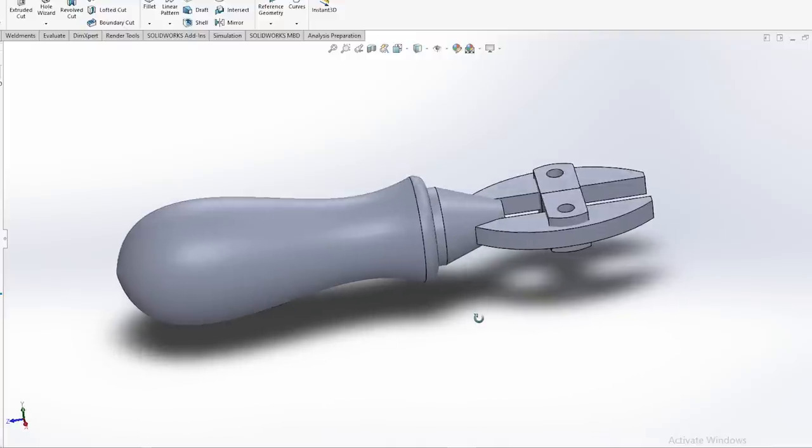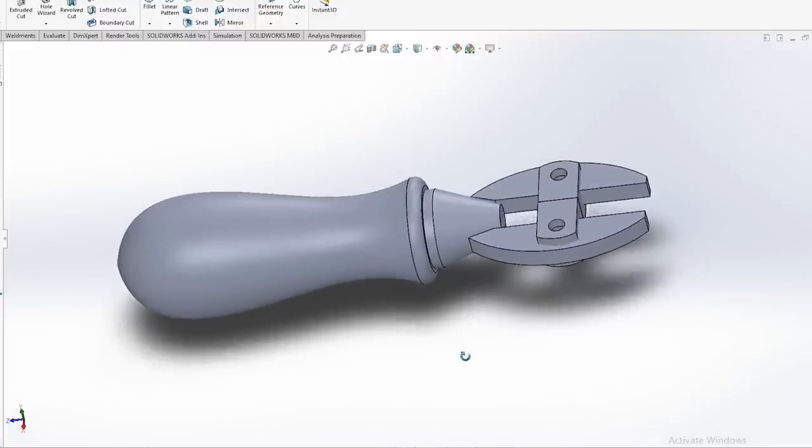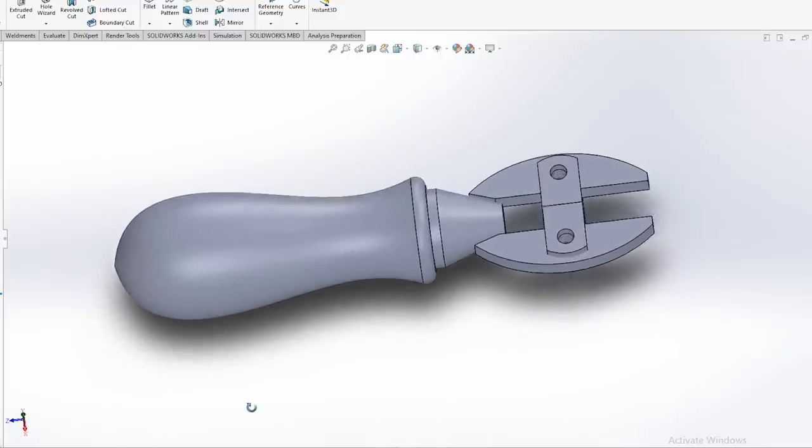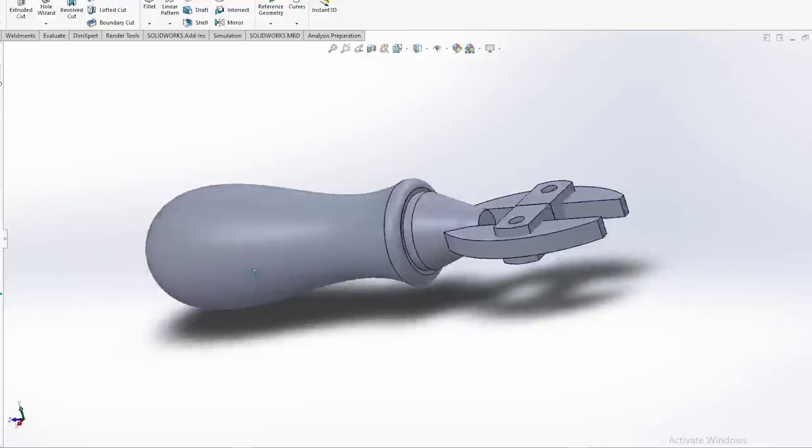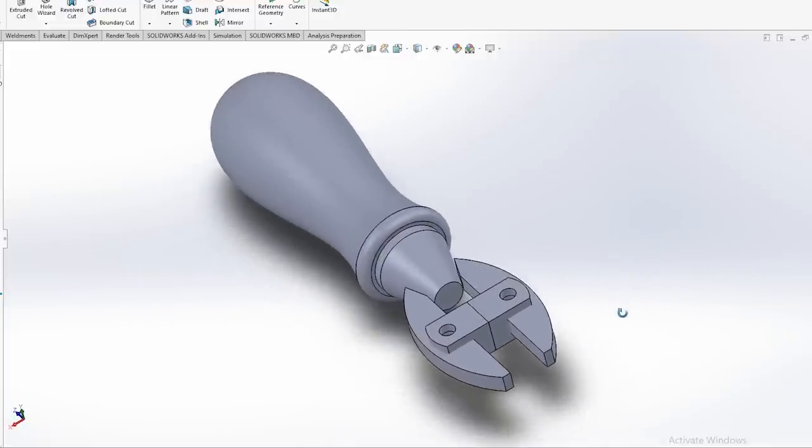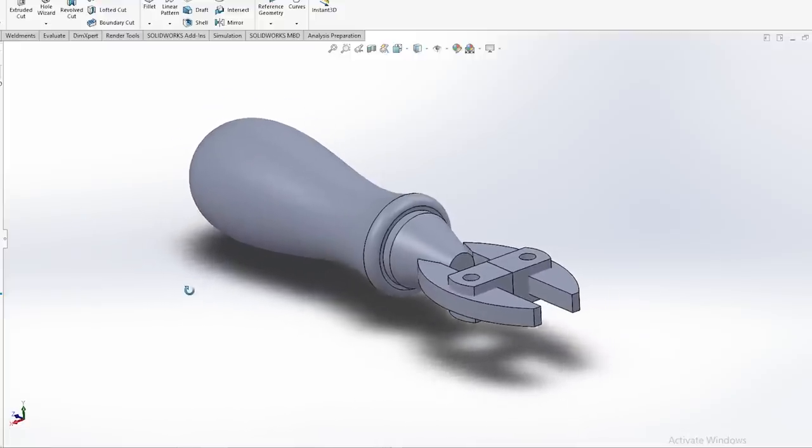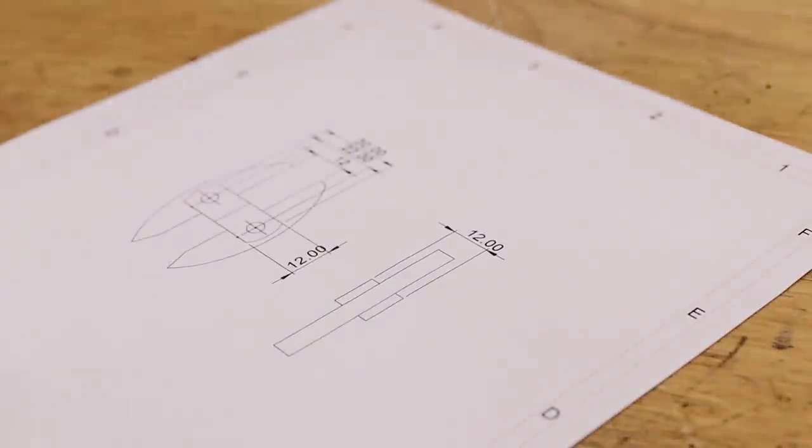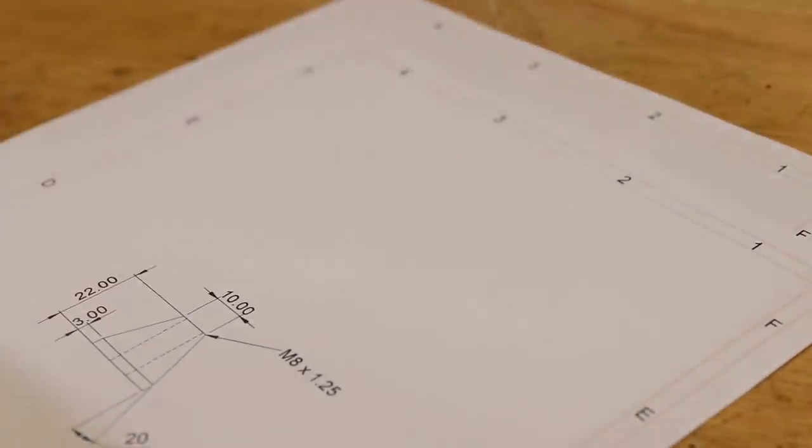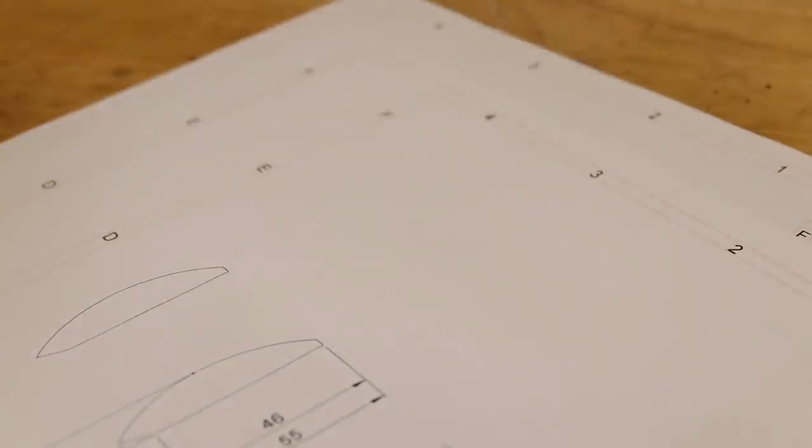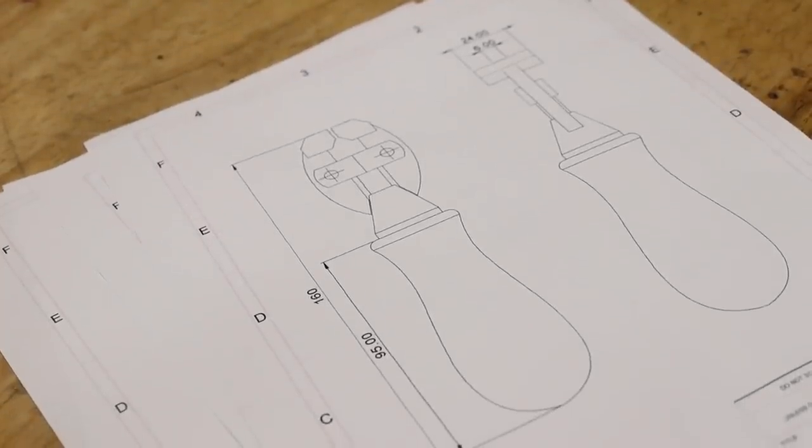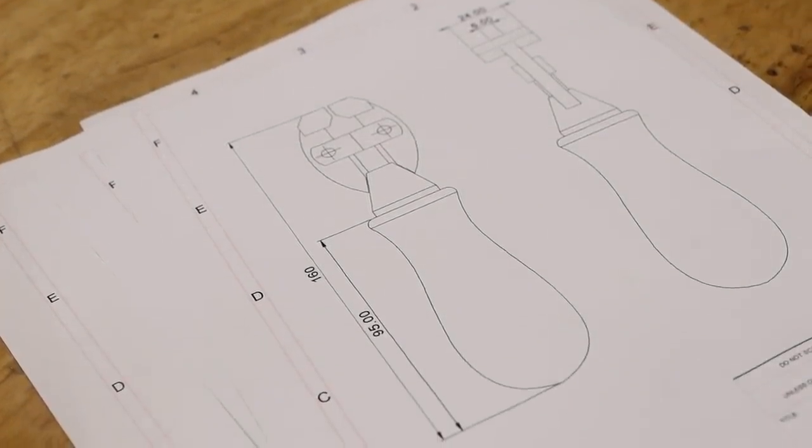Now before I started making it for real, I did a quick model on the computer just to get a basic understanding of the part and see how everything would go together. A quick model like this should only take about 10 to 20 minutes to do. And the other really useful thing about CAD is you can print out part drawings that will list all of the dimensions. So let's get started.